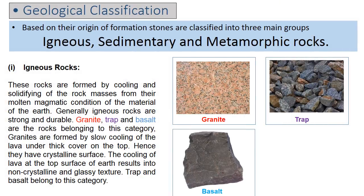Now let's discuss igneous rocks. Igneous rocks are formed by cooling and solidifying of rock masses from their molten magmatic condition. Generally igneous rocks are strong and durable. Granite, trap, and basalt are the rocks belonging to this category. Granite is formed by slow cooling of the lava under thick cover on the top, hence they have a crystalline surface. The cooling of lava at the top surface of the earth results in non-crystalline and glassy texture; trap and basalt belong to this category.